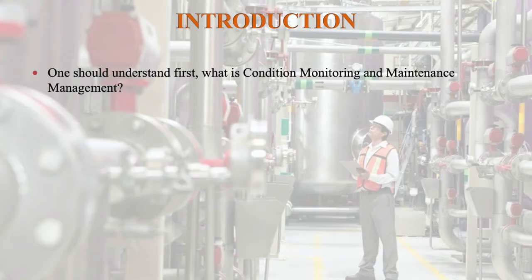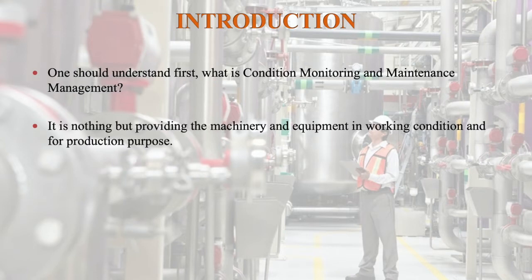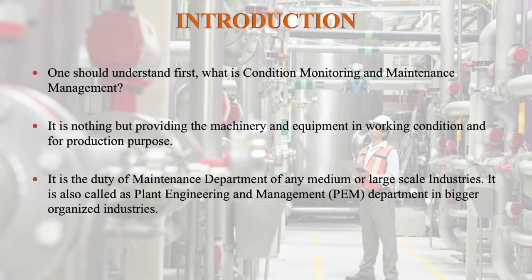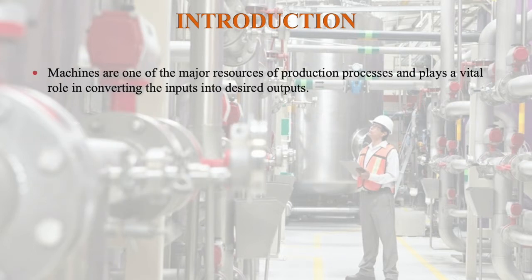Introduction. One should understand first what is Condition Monitoring and Maintenance Management. It is nothing but providing the machinery and equipment in working condition for production purpose. It is the duty of the maintenance department of any medium or large scale industry. It is also called plant engineering and management department in bigger organized industries. Machines are one of the major resources of production processes and play a vital role in converting inputs into desired outputs.